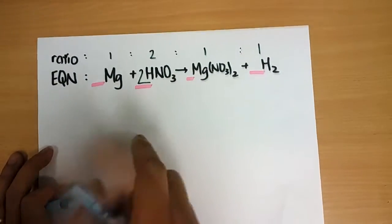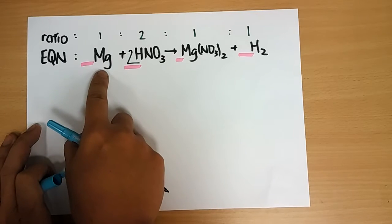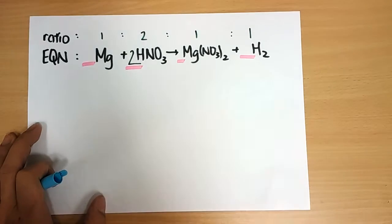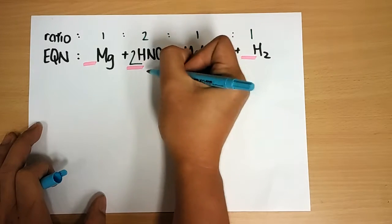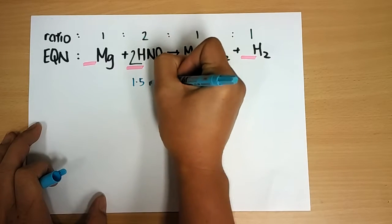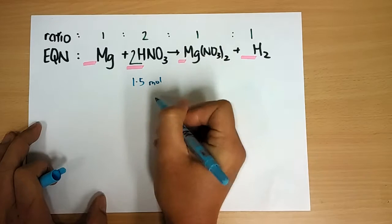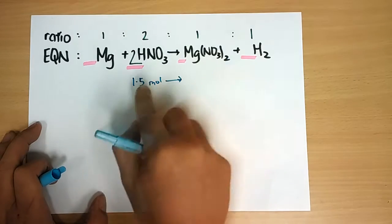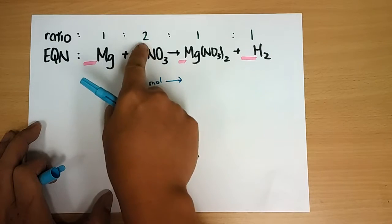In this equation, you have magnesium: 1 mole of magnesium reacting with 2 to produce 1 is to 1. So if I have 1.5 moles of HNO3, this will give me how many moles? How do we look at this? We look at the mole ratio.